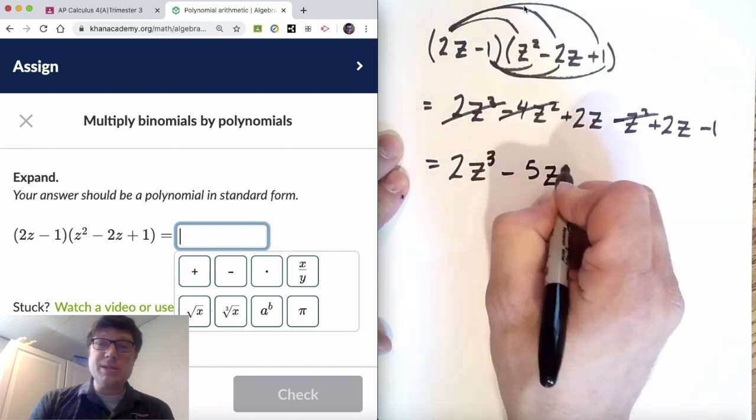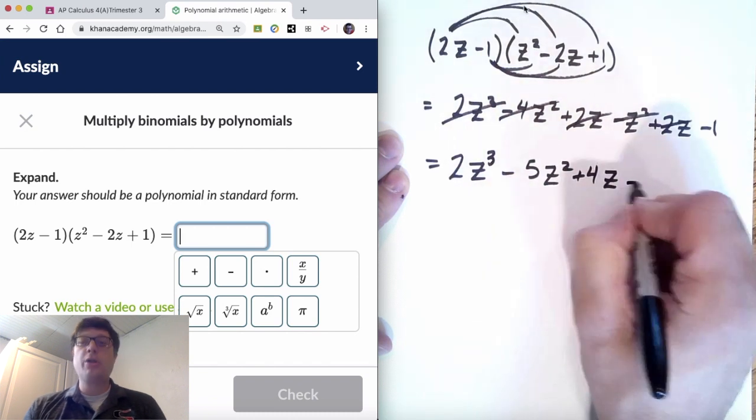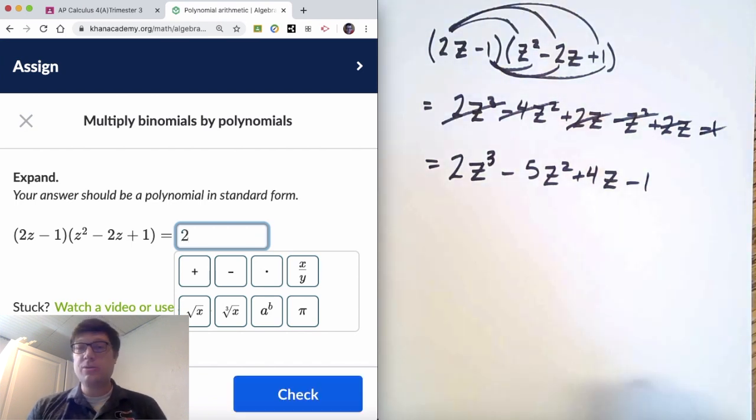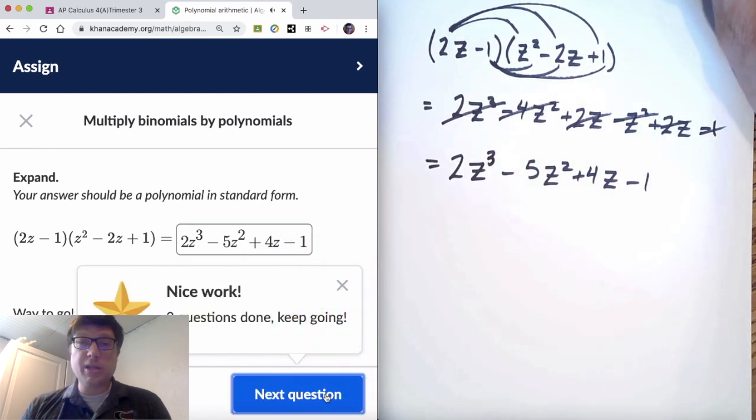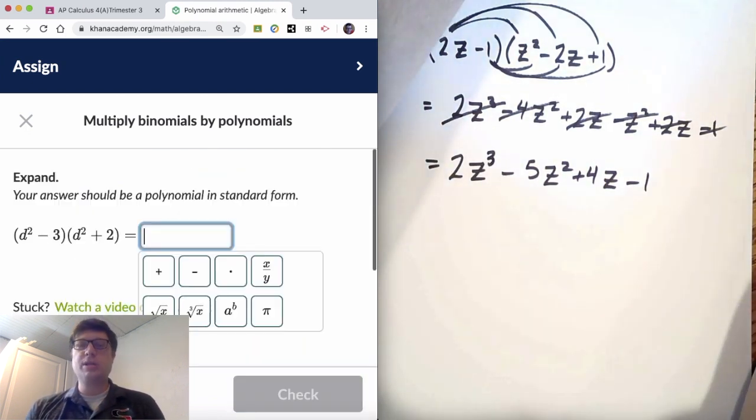When you multiply z times z squared, that gives you z to the third. When you multiply z times z, that gives you z squared. So that exponent has to trickle up as we go through. Combine like terms. I like crossing out where I'm at along the way to get the right answer.